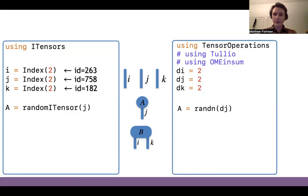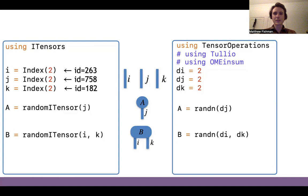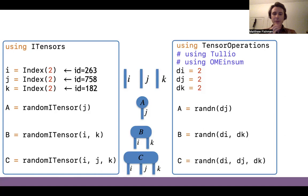If we want to create an order-two tensor in iTensor, we define our ITensor with two indices, whereas with standard Julia arrays we would make a matrix of size two by two, and so on. When we make these ITensors, they remember the unique identifiers of the indices so that they can be used in tensor contractions.